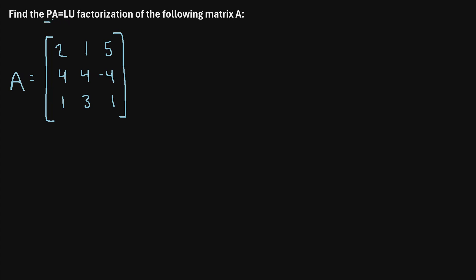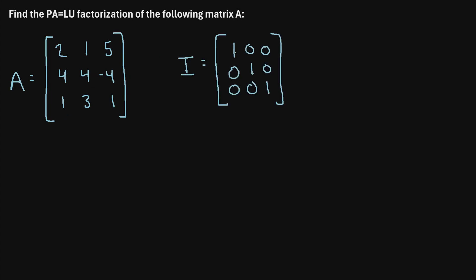P is known as the permutation matrix. It's simply an identity matrix whose rows have been swapped to match the row swaps that we perform in matrix A. For a three by three matrix, the identity matrix has ones along the diagonals and zeros everywhere else. The permutation matrix will be this identity matrix with rows swapped based on any row swaps we perform during the LU factorization.